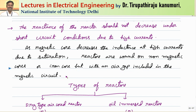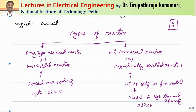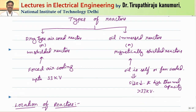By including air gaps in the magnetic circuit — that is, holes provided within the core — the core will not get saturated. These air gaps prevent saturation even at high currents. More detail on this topic is available in the instrument transformers or switchgear and protection sections, so please refer there for further explanation.